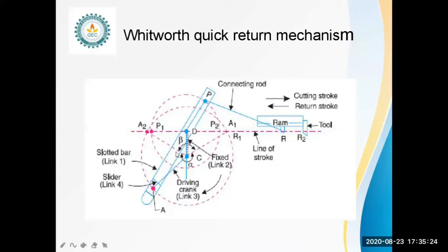The length of the stroke is equal to the time of cutting stroke divided by the time of return stroke. Here, alpha is considered as the time of return stroke. The total number of degrees is 360, so the ratio can be written as alpha divided by (360 minus alpha), which can also be written as (360 minus beta) divided by beta.